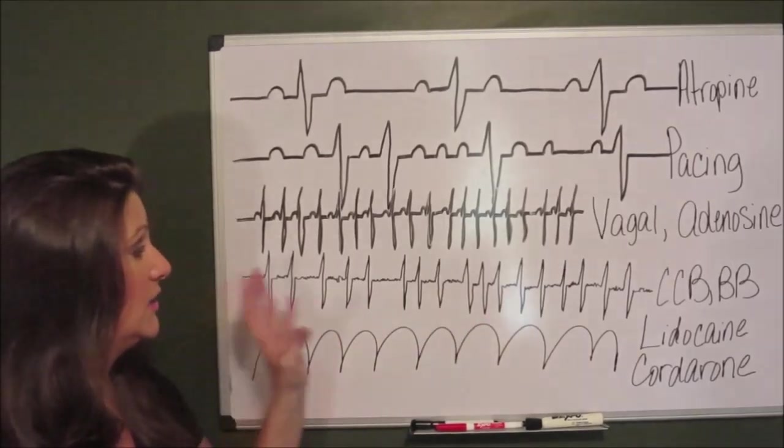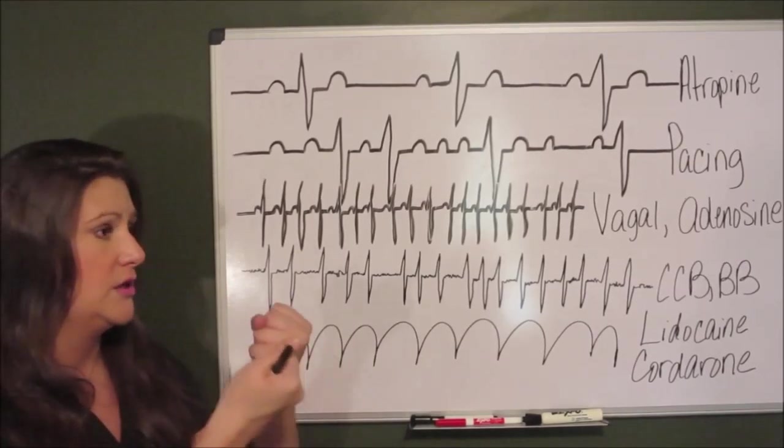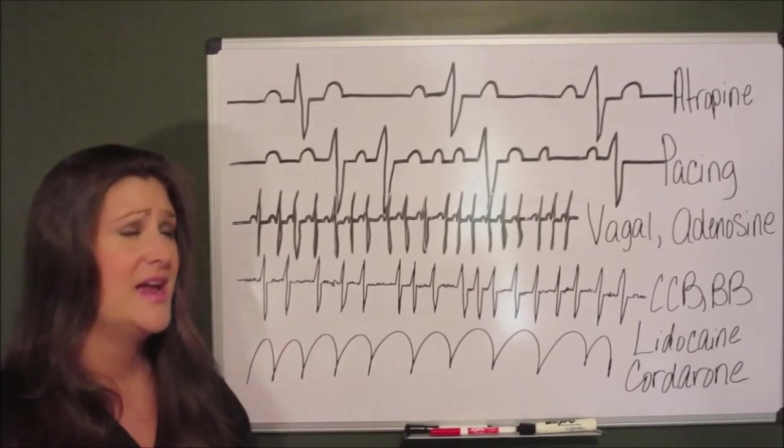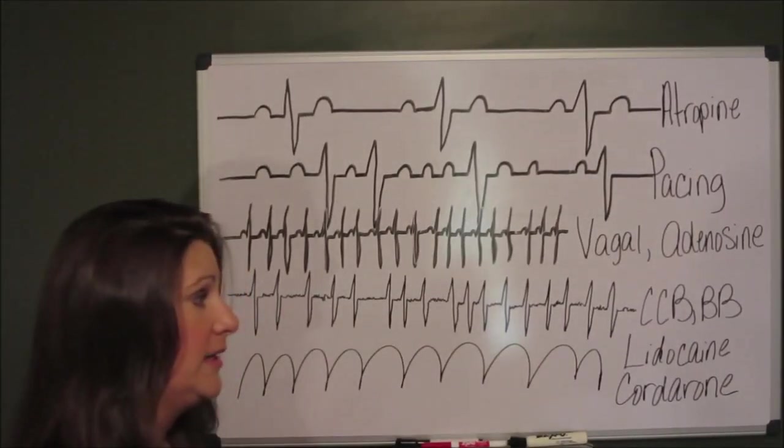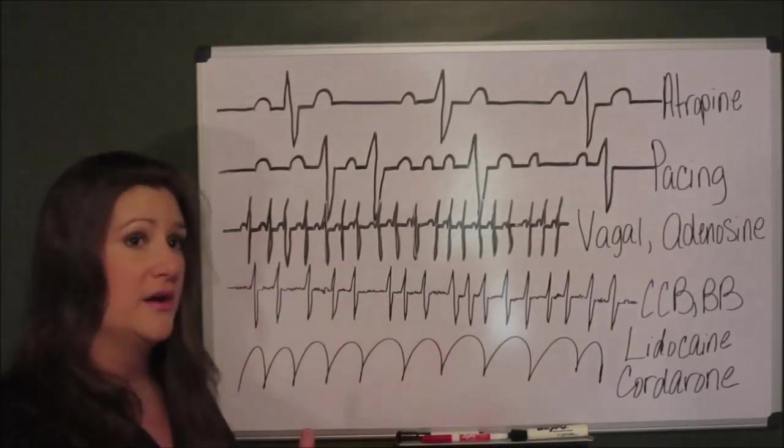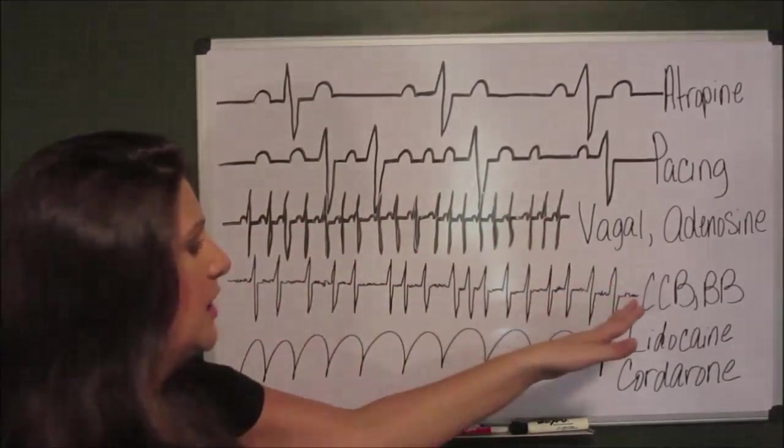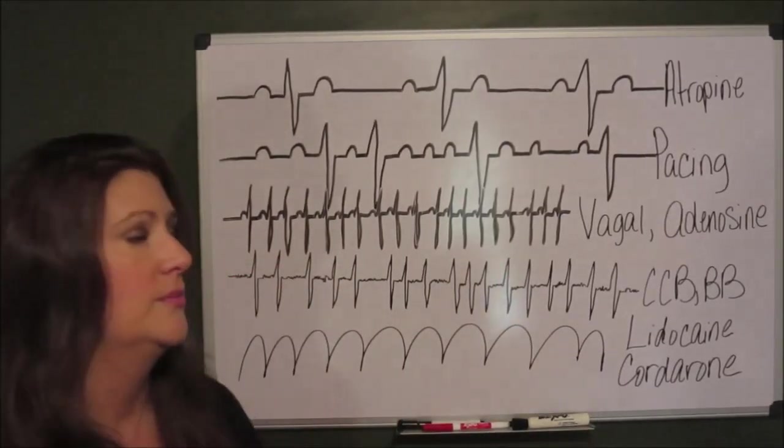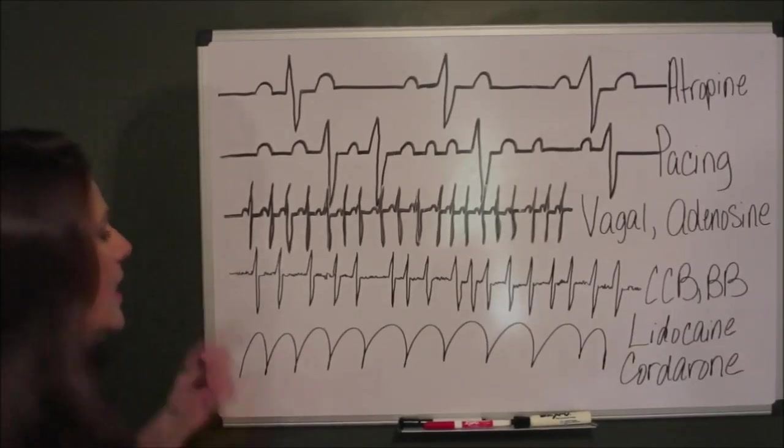Because this person has no atrial kick, so blood is going to sit in those atria and pool, and it's going to clot. So if you have somebody that you catch in AFib early and you can't get them converted out, then you're going to have to think about anticoagulation down the road. But the calcium channel blockers, usually Cardizem, beta blockers, is just going to be used to kind of slow that rate down.